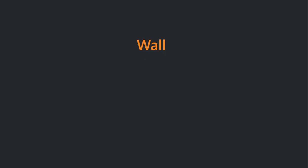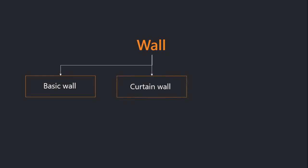There are three different groups of walls. The first one is the basic wall, which contains usual cavity walls and interior partitions. The second one is the curtain wall, which allows you to create walls that can be subdivided both horizontally and vertically into separate panels. And the last one is the stacked wall, where layers are stacked vertically and can be changed at different heights.